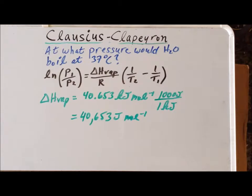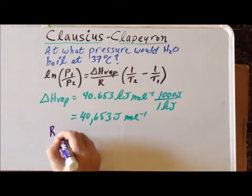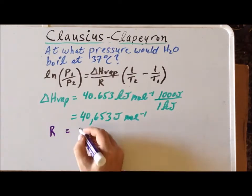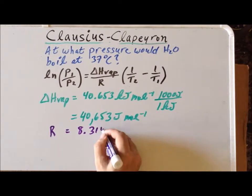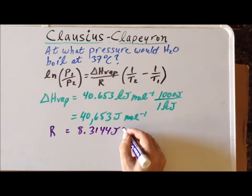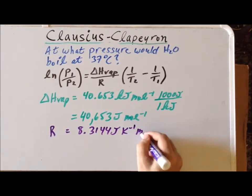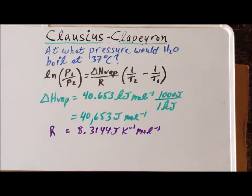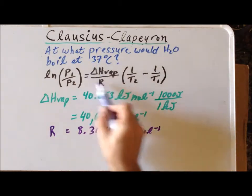The other quantity which is going to be useful is the gas constant R. We need to use it in the form 8.3144 joules per Kelvin mole. And we can evaluate this particular fraction immediately.